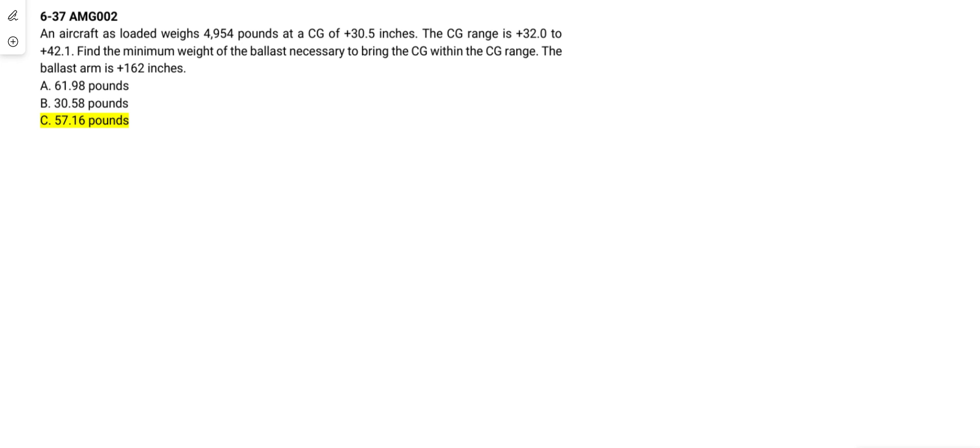In this particular weight and balance problem, an aircraft as loaded weighs 4,954 pounds at a CG of positive 30.5 inches. The CG range is positive 32.02 to positive 42.1.